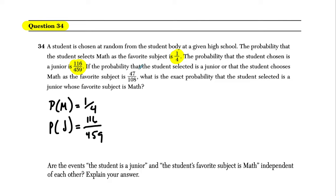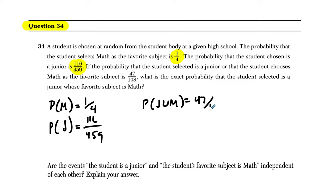The probability that the student selected is a junior or that the student chooses math — so the probability that they are a junior or they select math — is 47 out of 108.